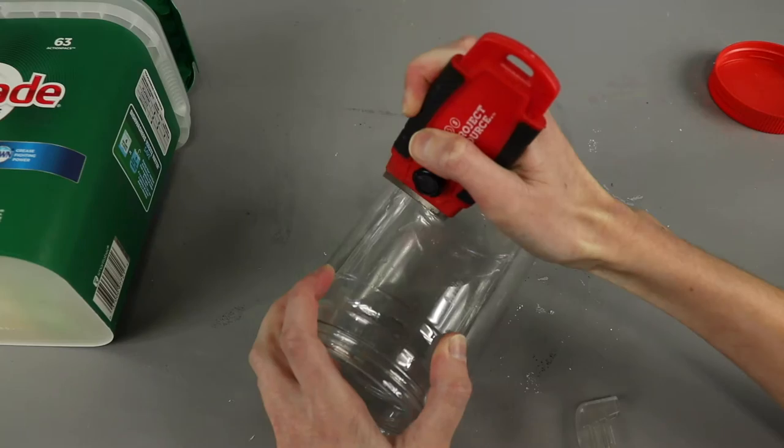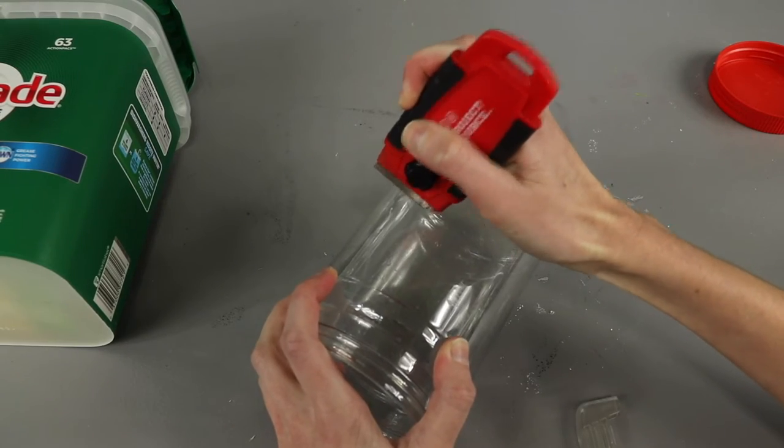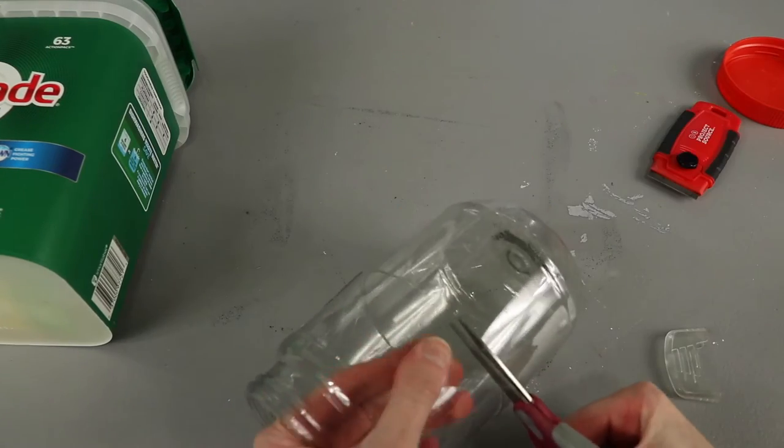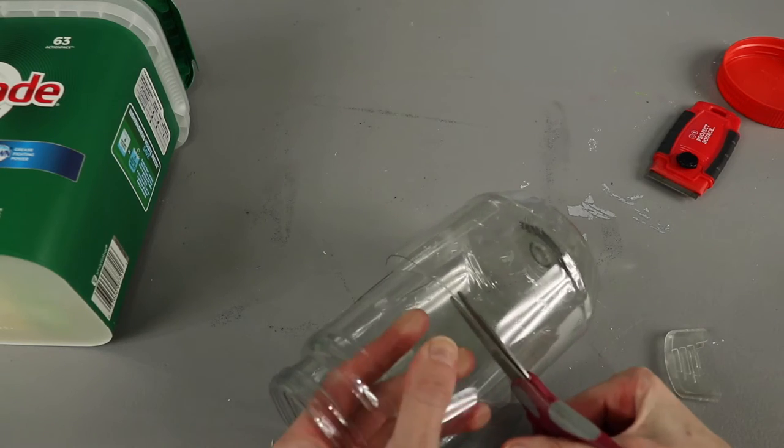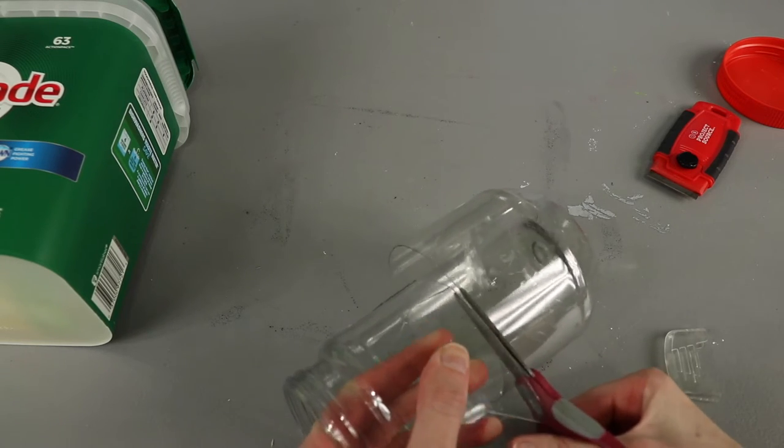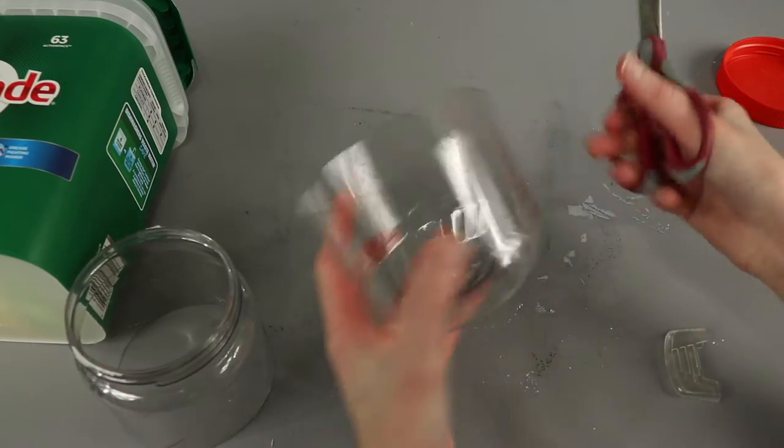While those were drying I scrounged up some plastic containers to make a hat. I cut the bottom off a peanut butter jar using a razor and scissors, and of course be careful with this step because the plastic might be more difficult to cut through than you expect which kind of happened to me.